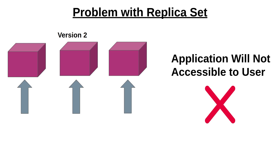The second problem is that if we deploy version 2 and we want to switch back to the previous version, we can't roll back with ReplicaSet. So we have two problems: one is that if we update with ReplicaSet we get downtime, and the second problem is that we can't roll back.